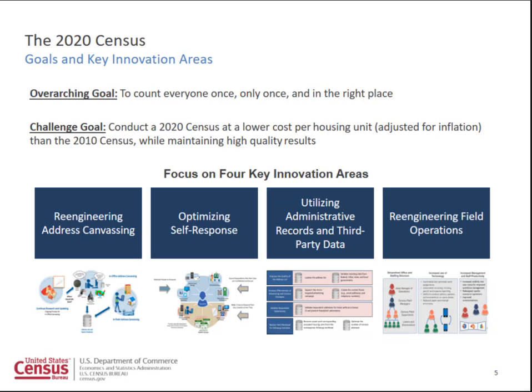The 2017 census test, which rolls out March 20th — just a few short weeks — will be the first deployment of our new internet self-response application. For the American Community Survey, we do use the internet, but the census is a little more complex. We're looking at about a six-week data collection period for self-response with upwards of two million concurrent users, which requires a system that's more robust and scalable than what we'd use for an ongoing current survey. We have about 10 topics on the census, anywhere from 10 to 15 questions counting administrative questions, but it really is the scalability that's an issue.